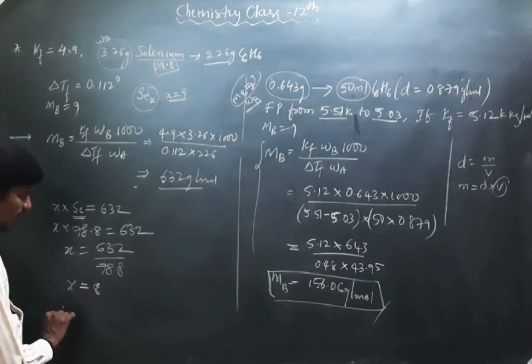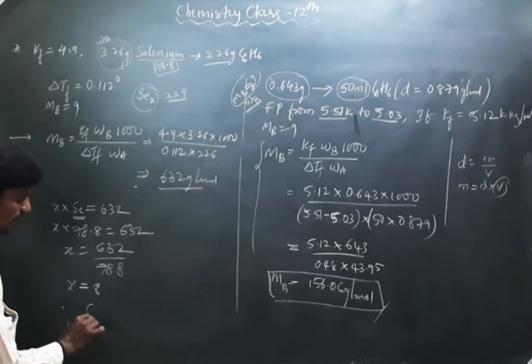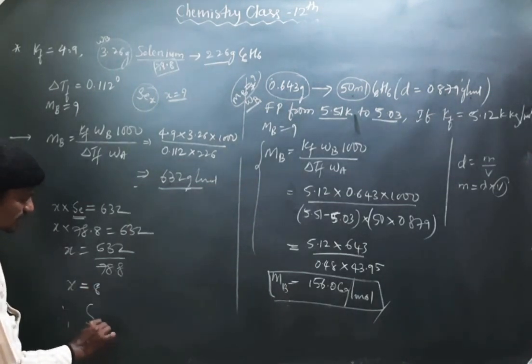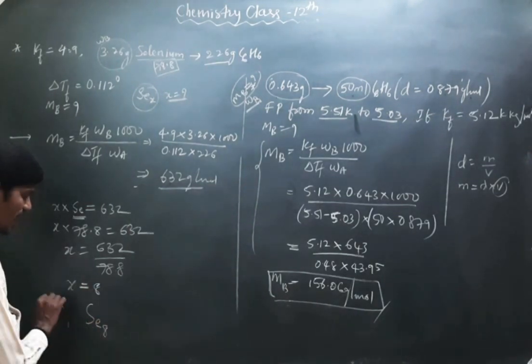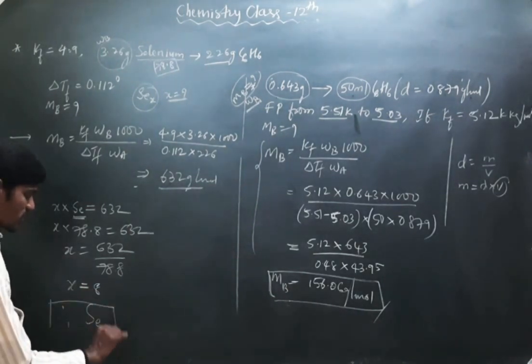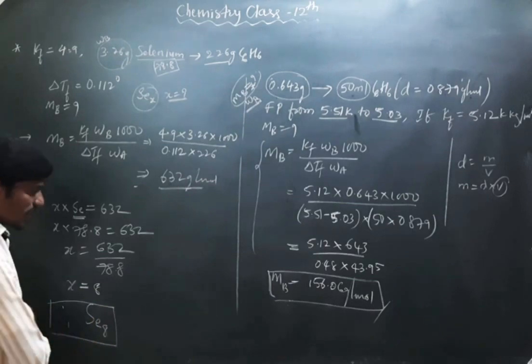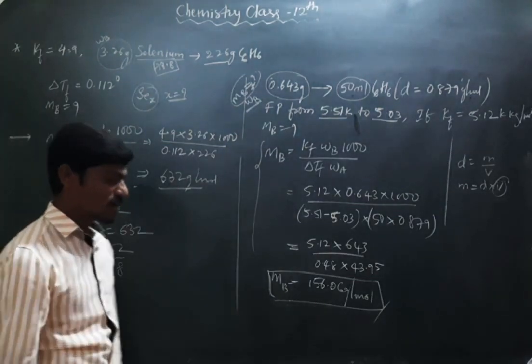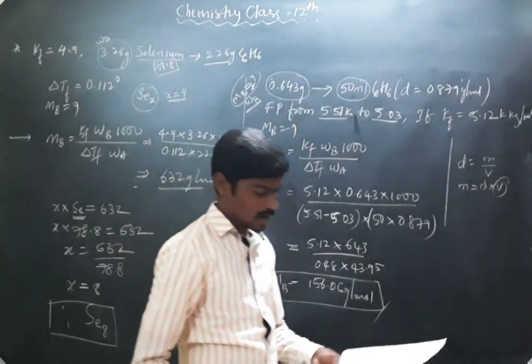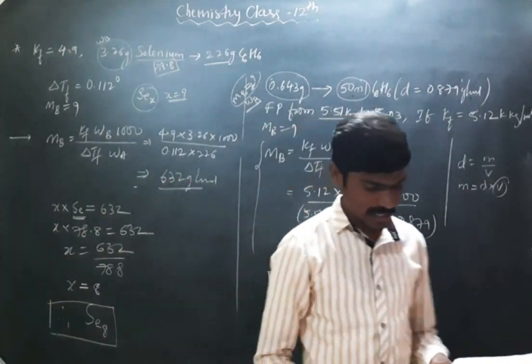Therefore, x = 632 / 78.8 ≈ 8. The molecular formula of selenium is Se₈.